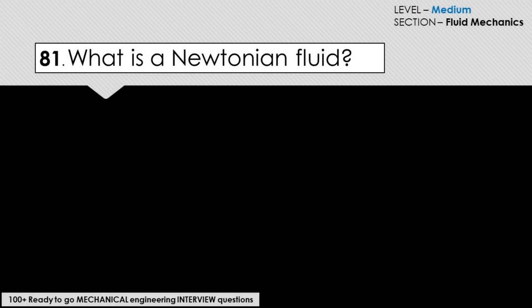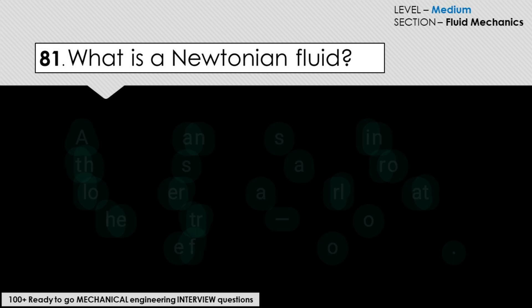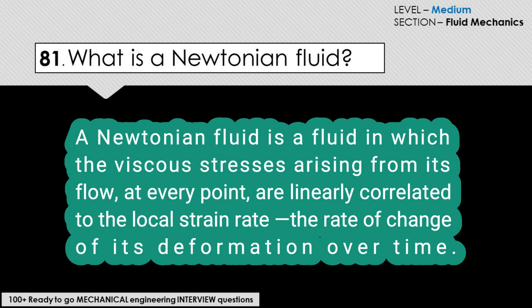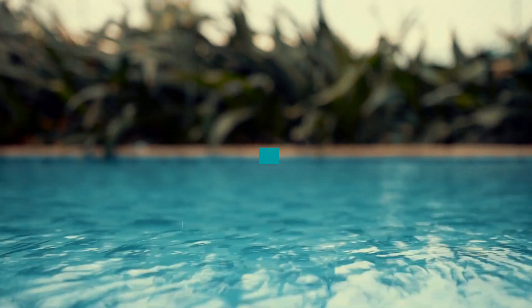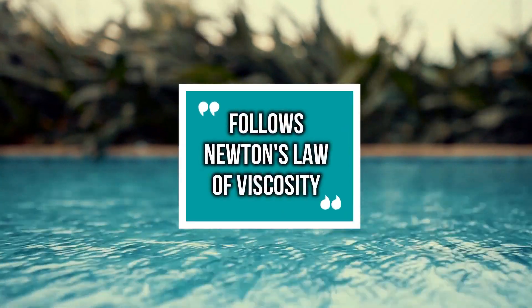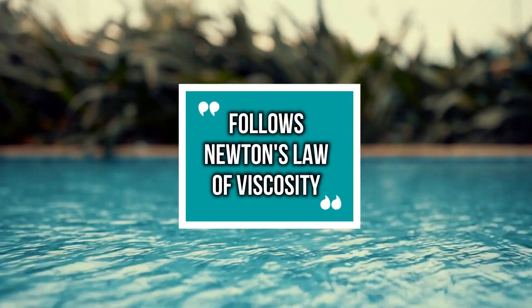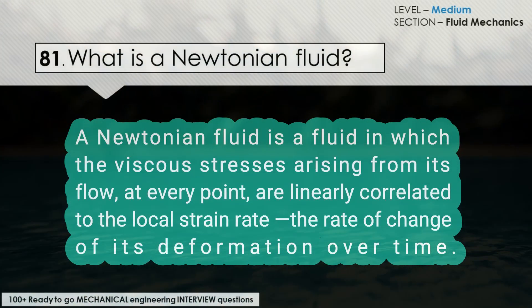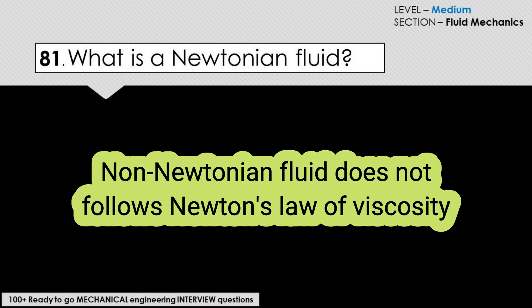What is a Newtonian fluid? A Newtonian fluid is a fluid in which the viscous stresses arising from its flow at every point are linearly correlated to the local strain rate — that is, the rate of change of its deformation over time. Basically, we can say a Newtonian fluid follows Newton's law of viscosity.